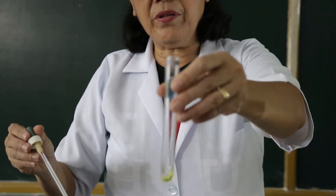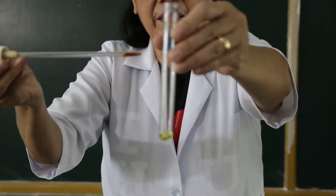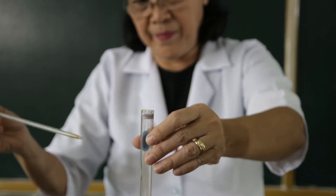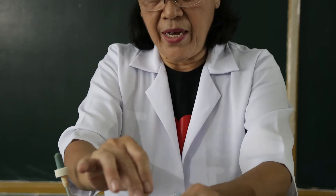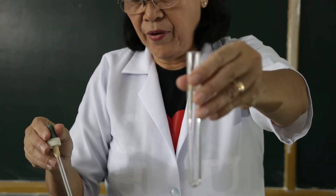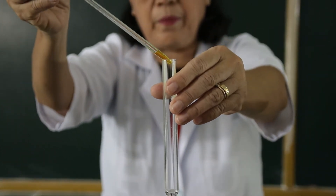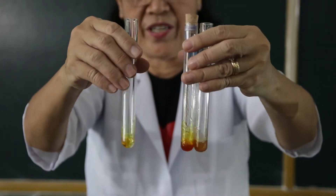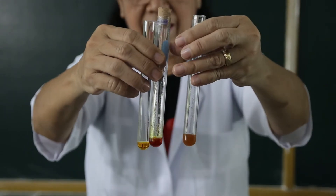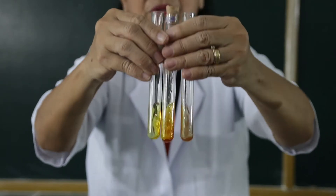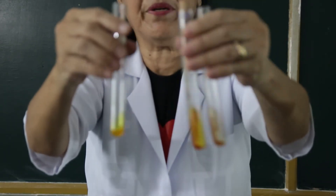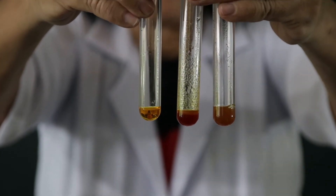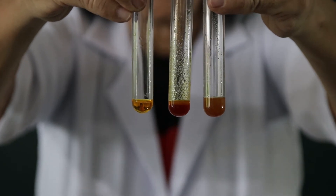We are going to drop also three drops of the 2,4-dinitrophenylhydrazine to the benzaldehyde. And to the acetone, we also add the 2,4-dinitrophenylhydrazine. Let us shake this mixture of the formaldehyde, the benzaldehyde, and the acetone. I want you to take note and observe what happens. Is there a formation of a precipitate? In which test tube is the precipitate formed?